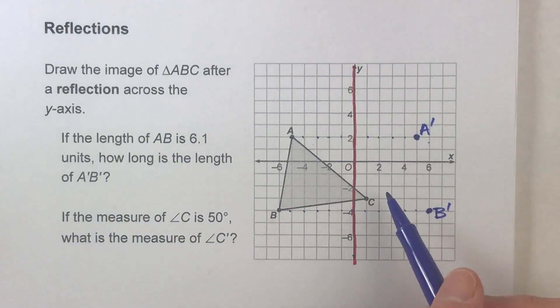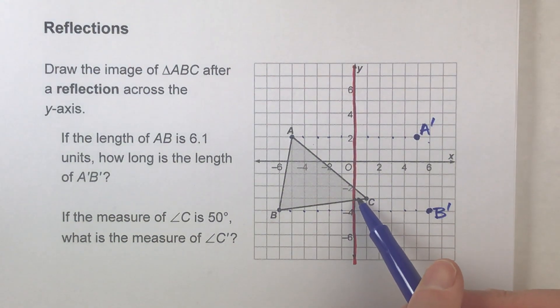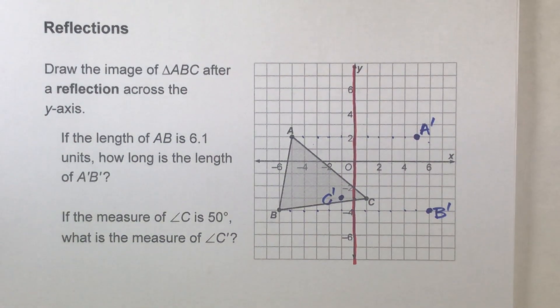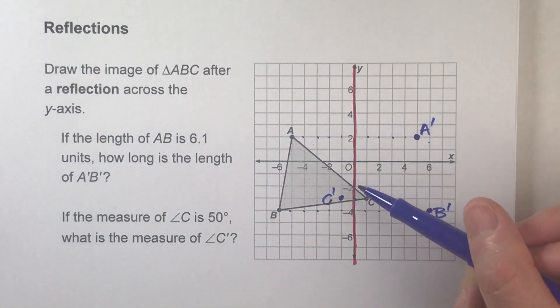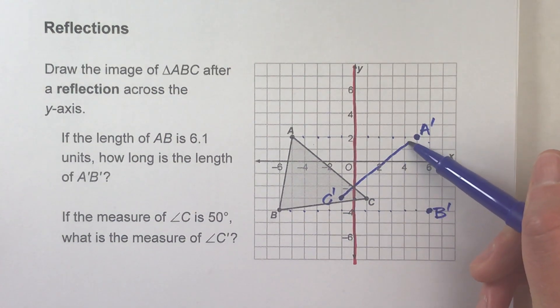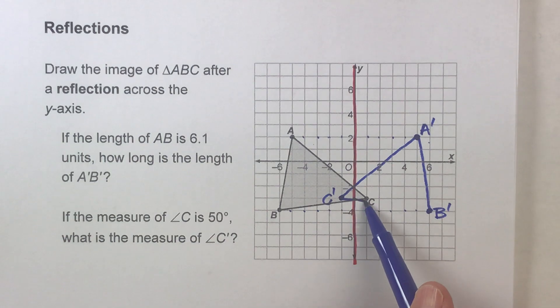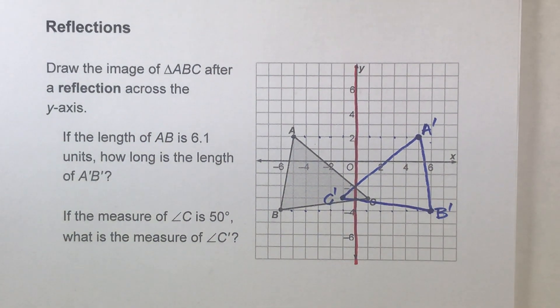And then finally, C. C is one step away from the mirror on the right side, so its reflection is going to be one step away from the mirror on the left side. There's my C prime. So once I connect these points up, we'll have my reflected triangle. And there they are.